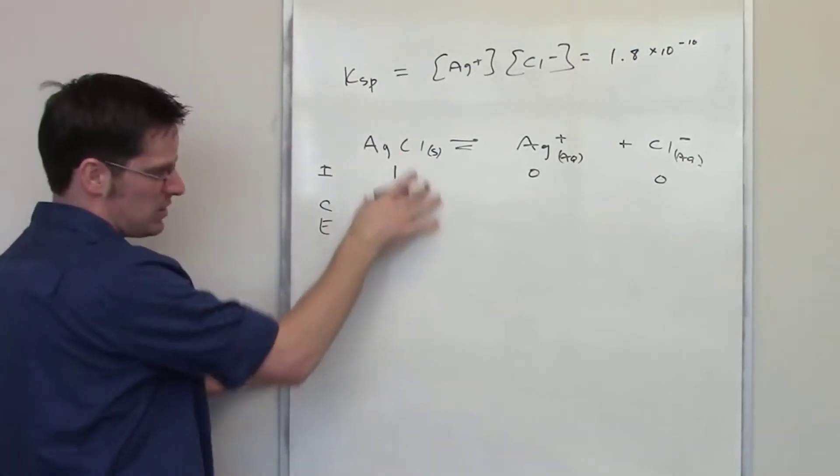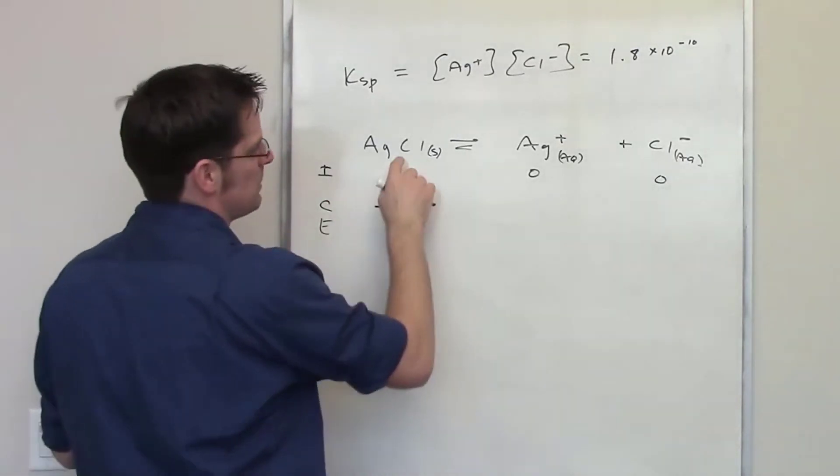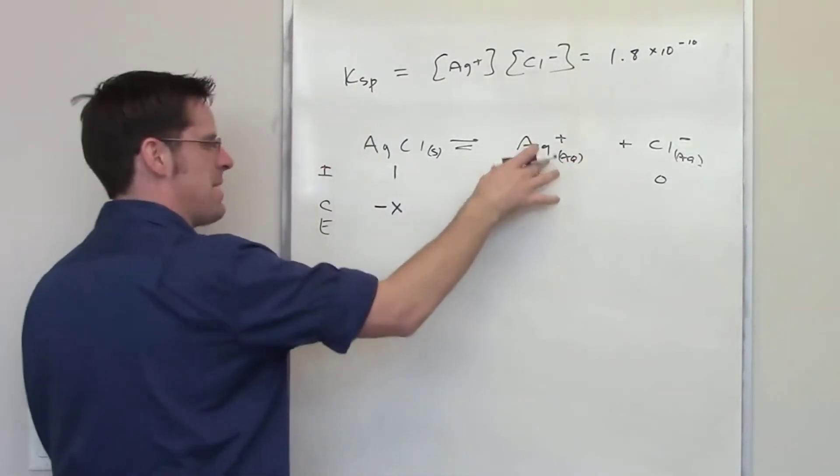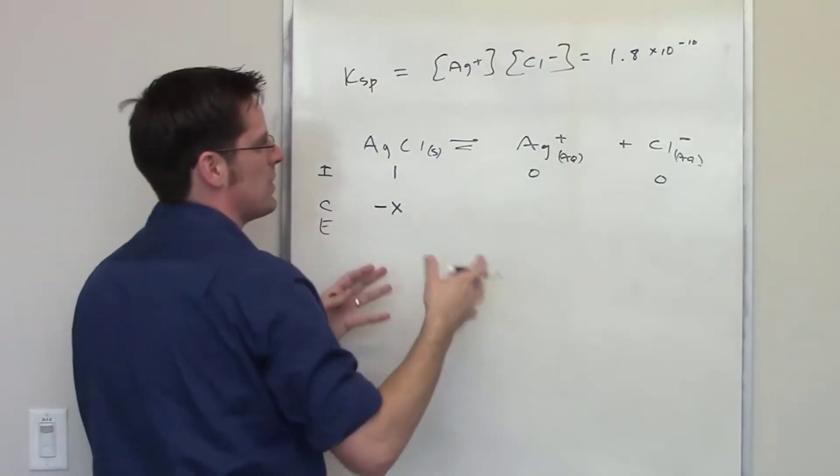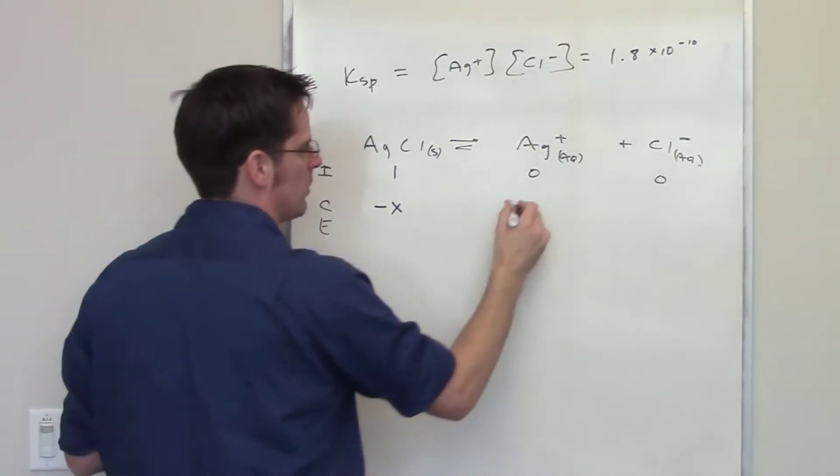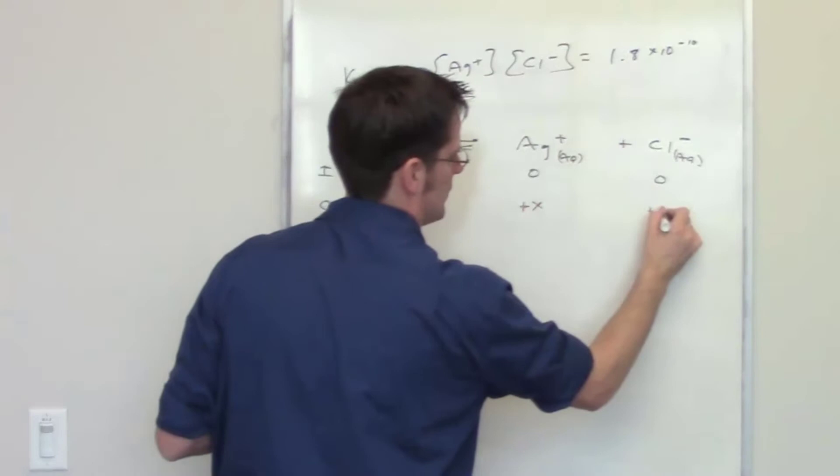Okay, so I have minus x right here. Because this is present in a 1 to 1 to 1 ratio, the amount of these that are formed as we eventually drift back and forth until we get to equilibrium are going to be plus x for each.